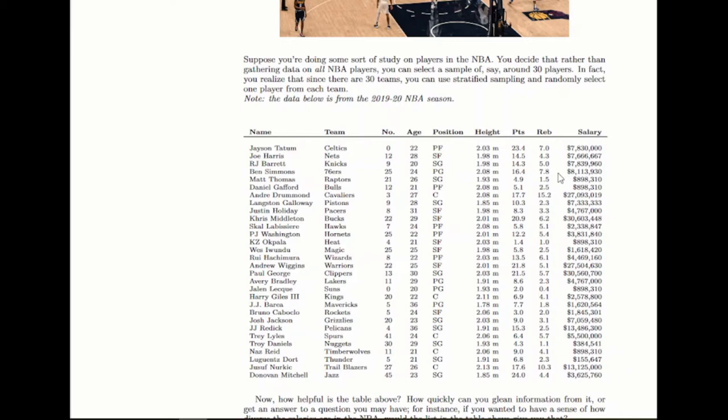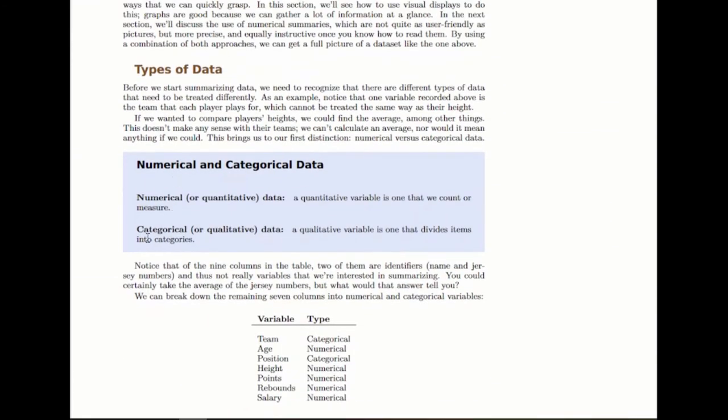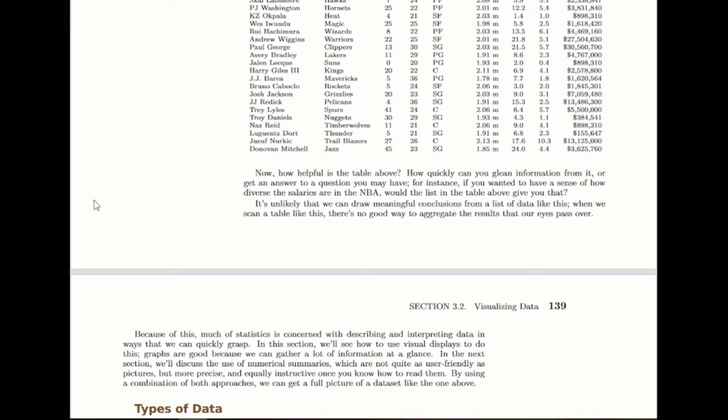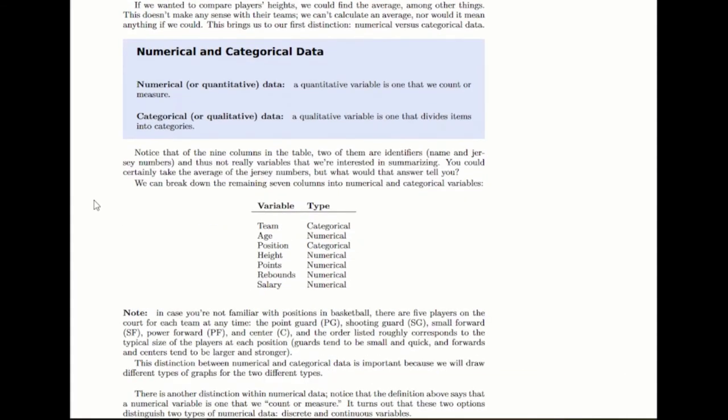The other type of data is a categorical variable, and that's one that basically divides your sample or your population into categories. For instance, their positions would be categorical, because some of them are one position, some are another position. Their team would be another categorical variable that distinguishes them into these categories.